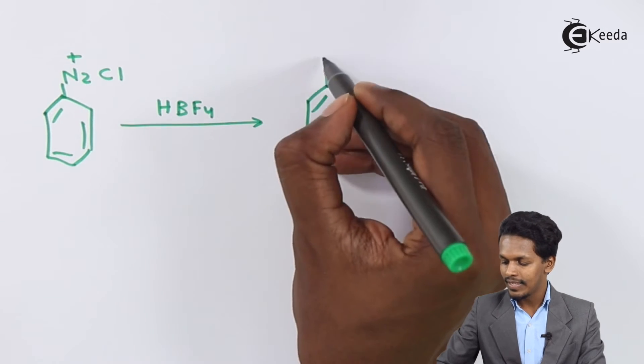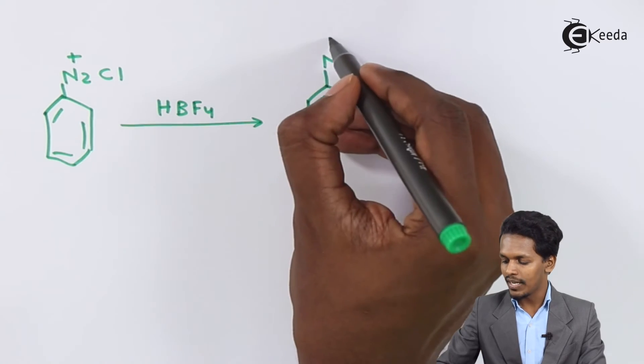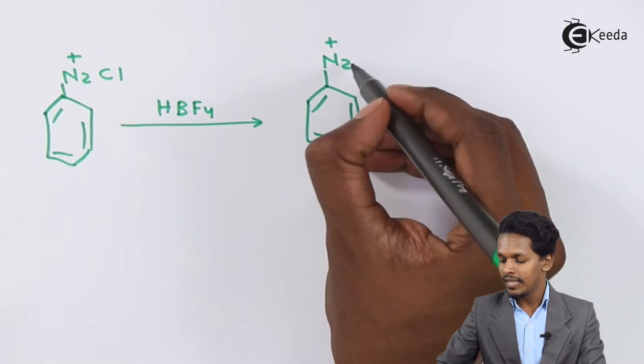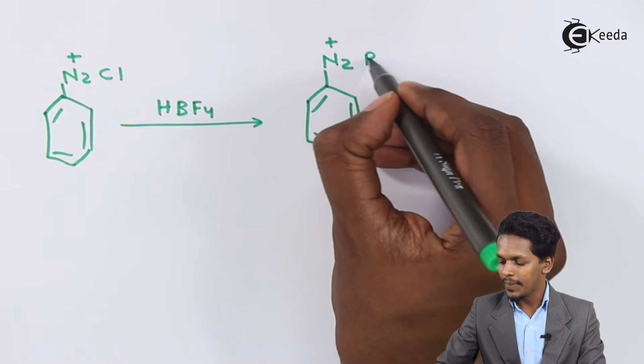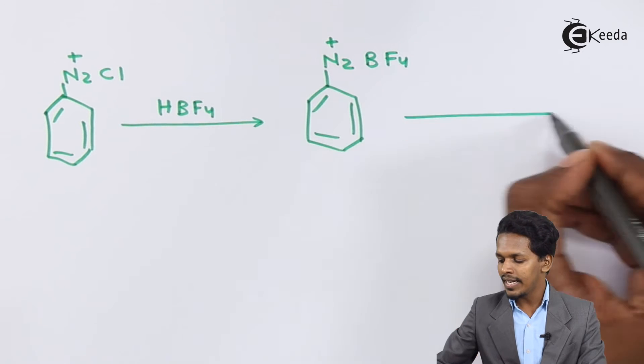In that case, basically we could get a product, again a formation of a salt, where we could find that this N2 along with Cl will be replaced with BF4. And on further heating...